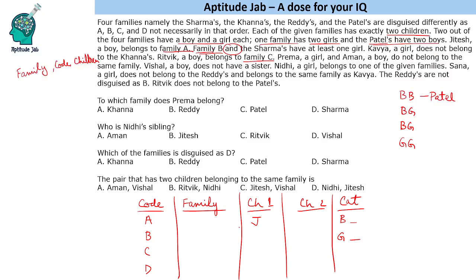Ritwik, a boy, belongs to family C, so family C has at least one boy. Prema, a girl, and Aman, a boy, do not belong to the same family — so Prema and Aman belong to different families. Vishal, a boy, does not have a sister, so Vishal belongs to the boy-boy family which is Patel — so one of the persons in Patel is Vishal. Nidhi, a girl, belongs to one of the given families. Sana, a girl, does not belong to Redis and belongs to the same family as Kavya — so Sana and Kavya are two sisters.